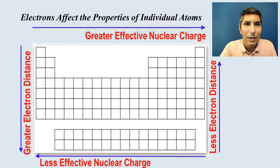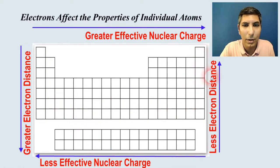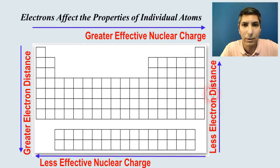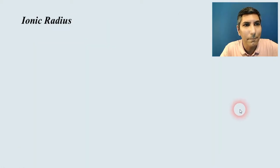Here's our cheat sheet graphic again to help us with the reasoning. For atomic radius, if you're going up and down you talk about electron shells, and if you're going left and right you talk about effective nuclear charge.